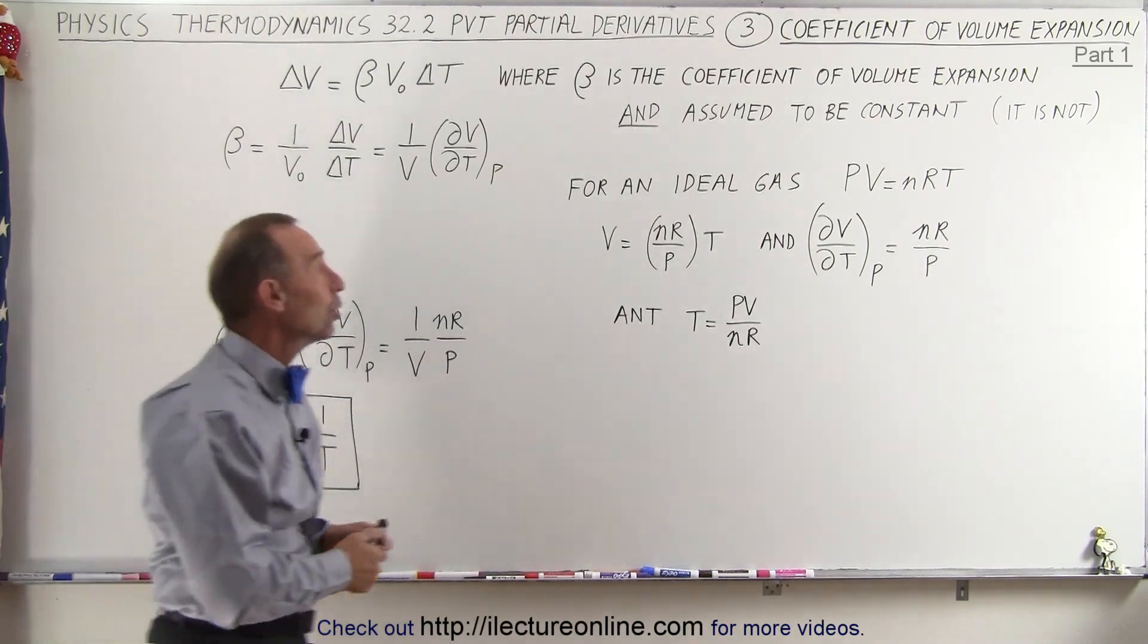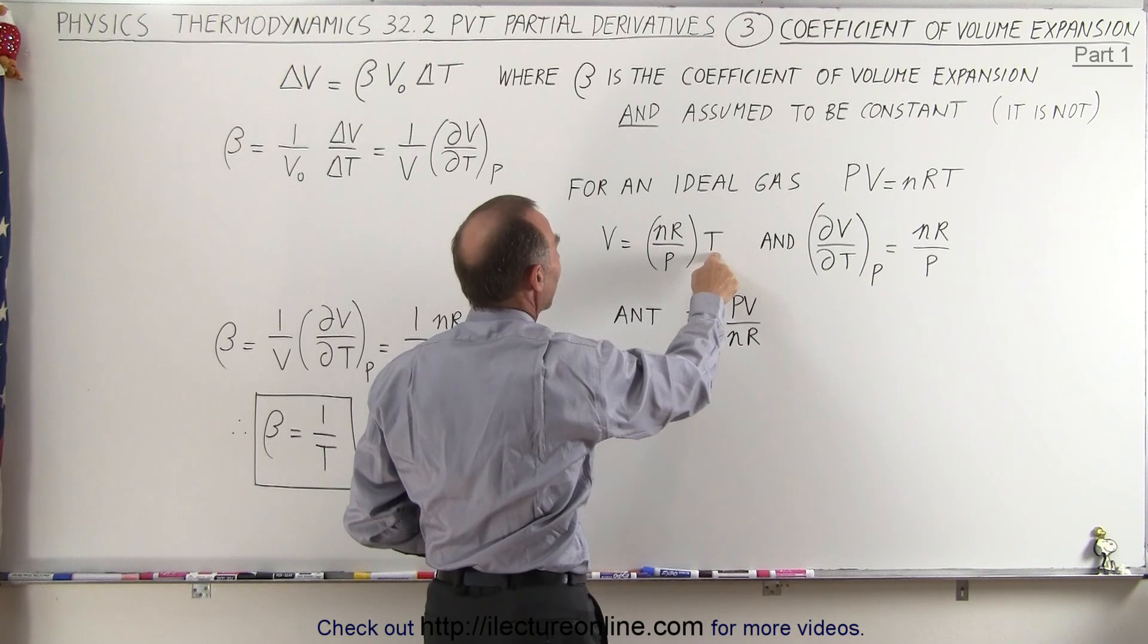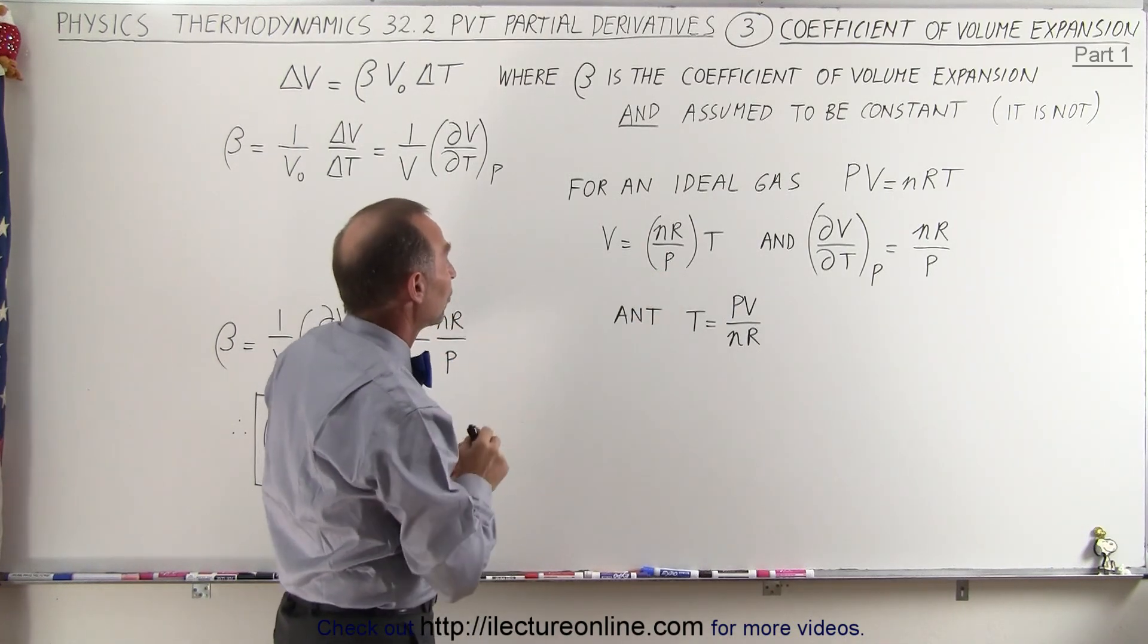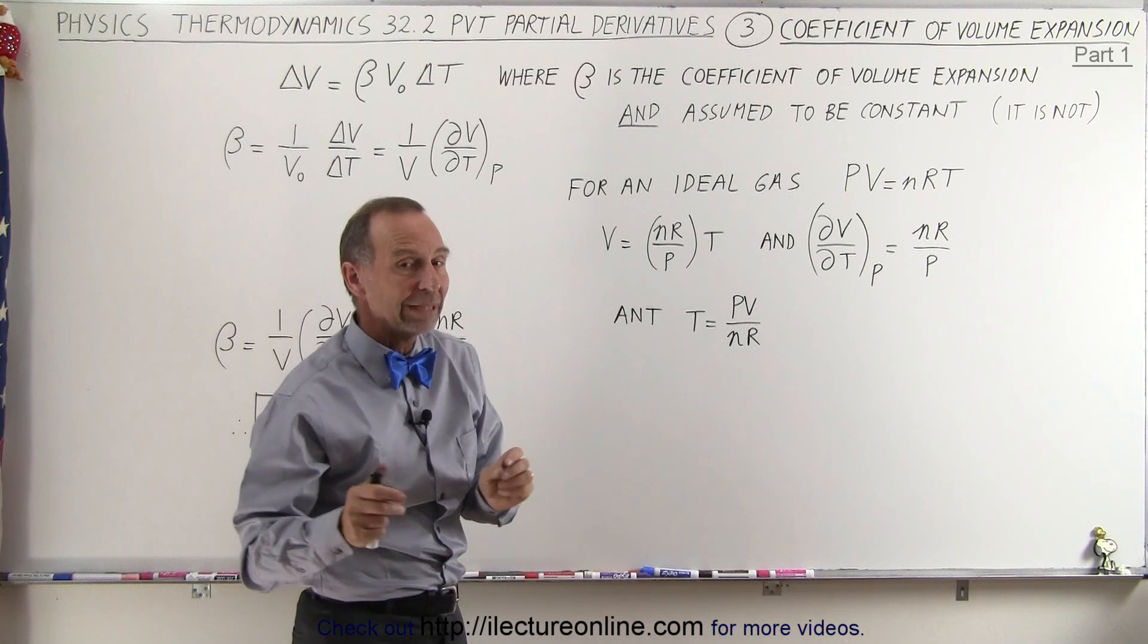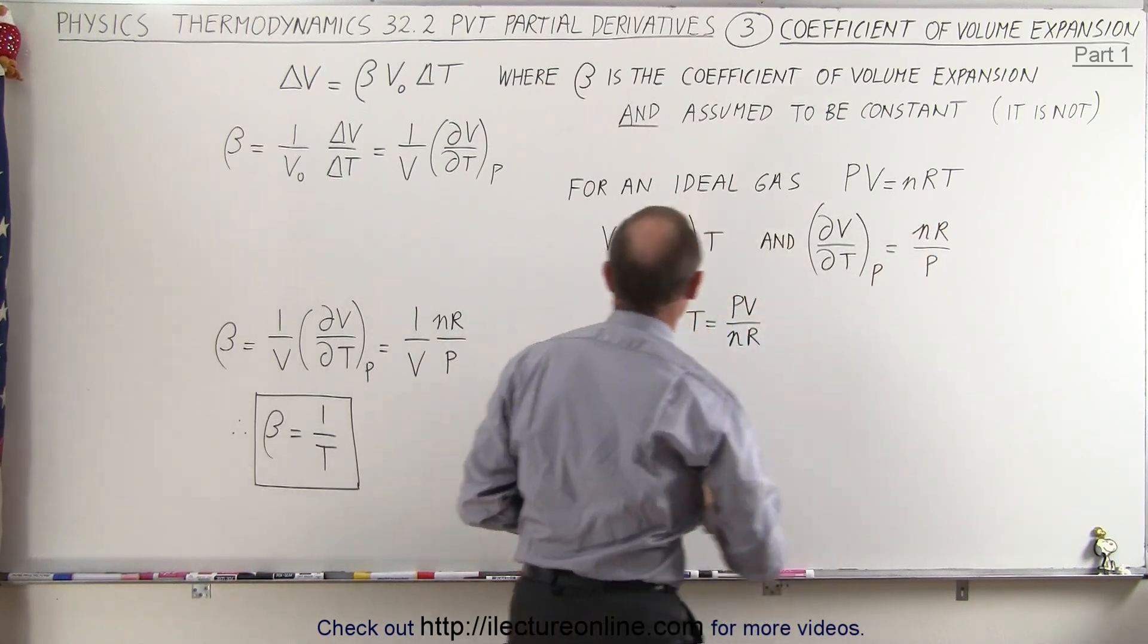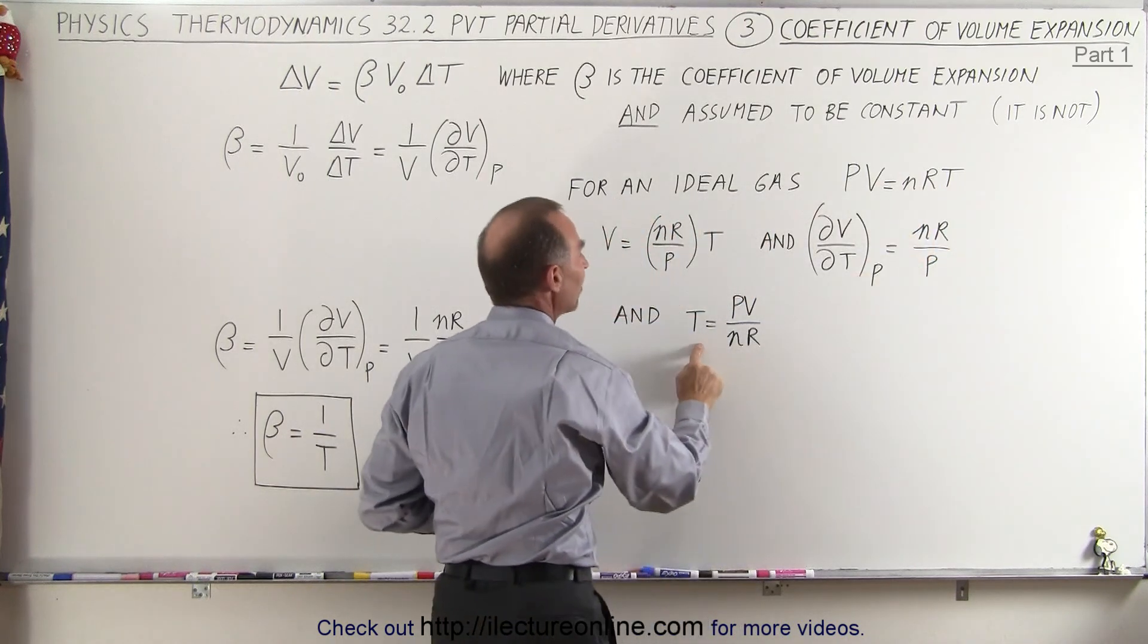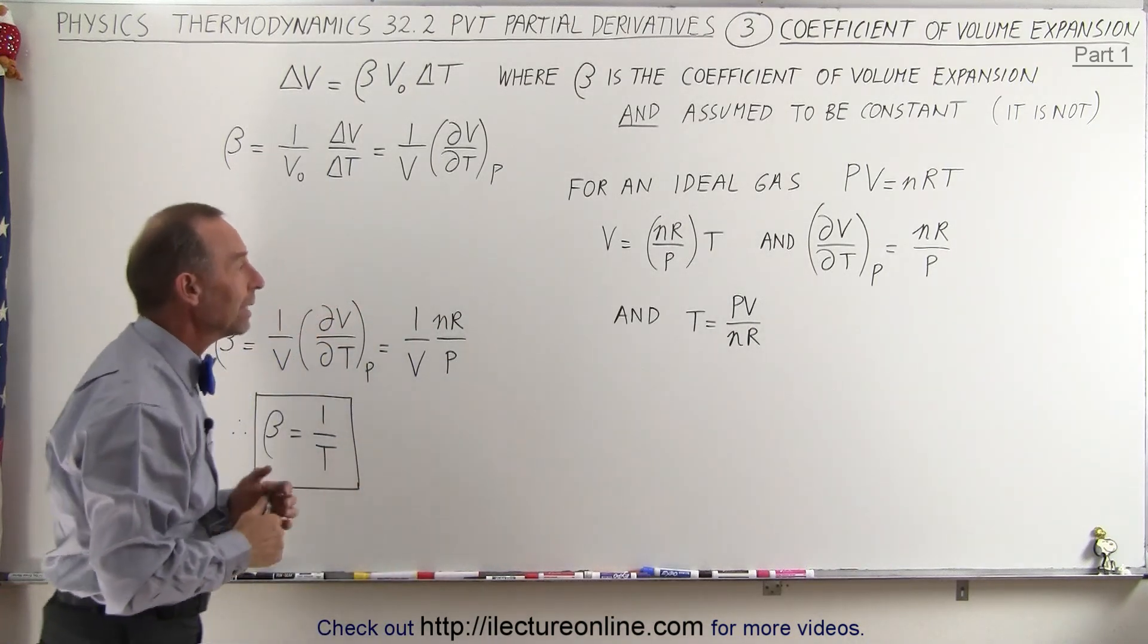Now for an ideal gas we know that PV equals nRT. We can solve that equation for v being nR over p times t, and of course if we assume that the pressure remains constant in this particular process, we can say that v is equal to a constant times the temperature. Then if we take the partial derivative of that with respect to temperature with pressure remaining constant, that is equal to nR over p. And we can also say that if we take the ideal gas equation and solve for t, then t is equal to PV over nR. Now of course that is true for any condition for any gas if we assume it to be an ideal gas.